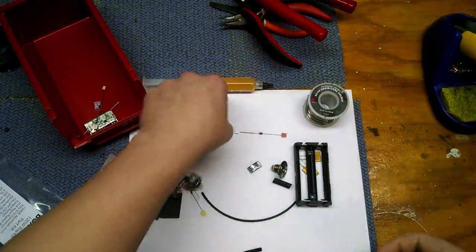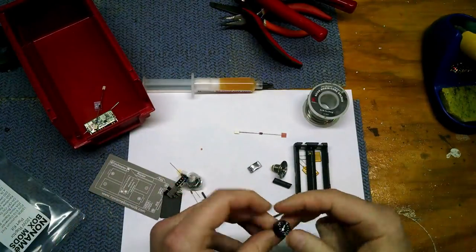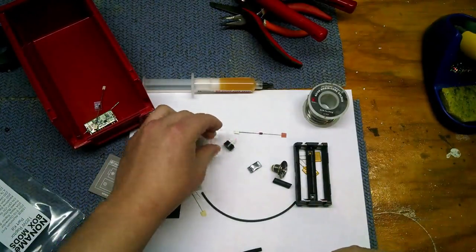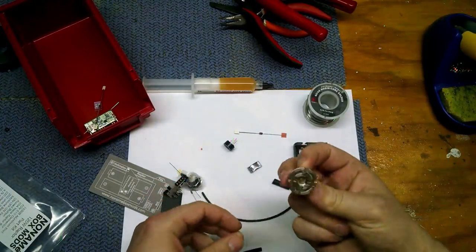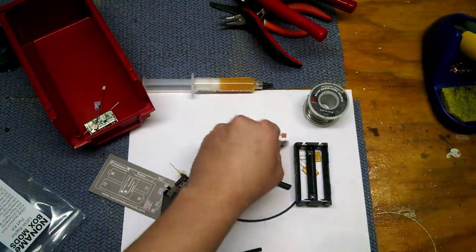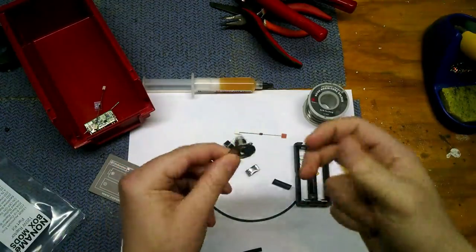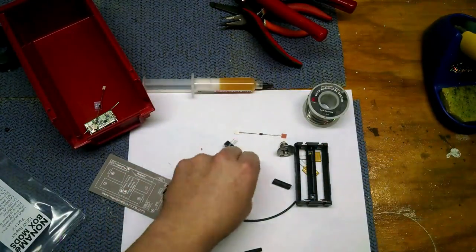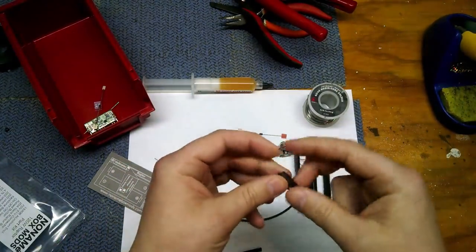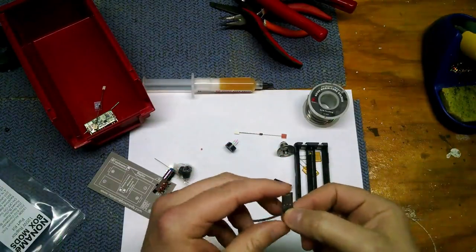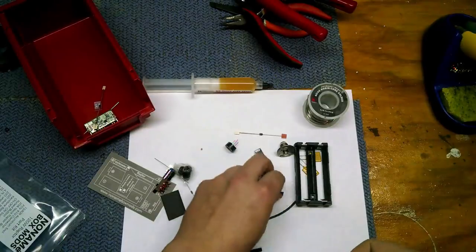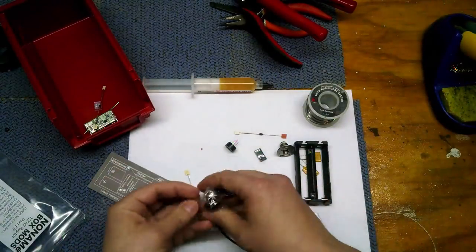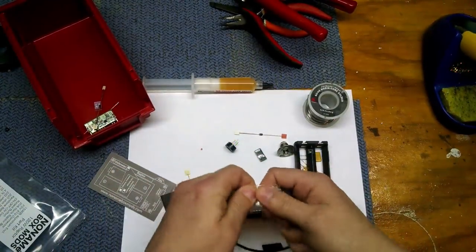To start off with, we have a 5.6V Zener diode, a 200 ohm potentiometer, low profile 510 connector from Fat Daddy Vapes. Personally, I feel like these are the best 510 connectors on the market. That's why I only use Fat Daddy Vapes. This is a P-channel MOSFET, and that's for reverse polarity protection.